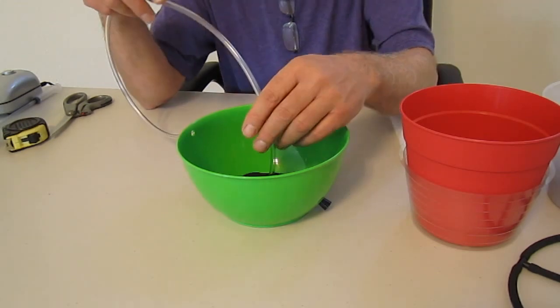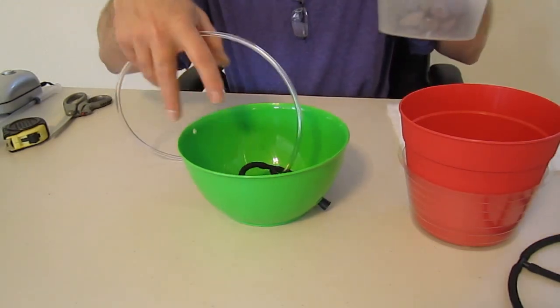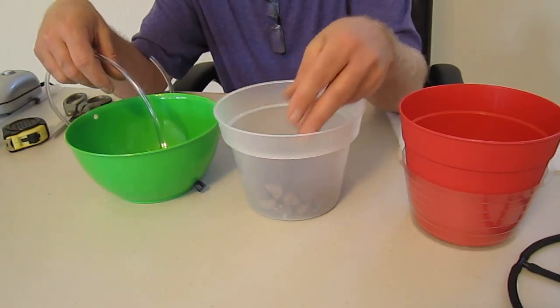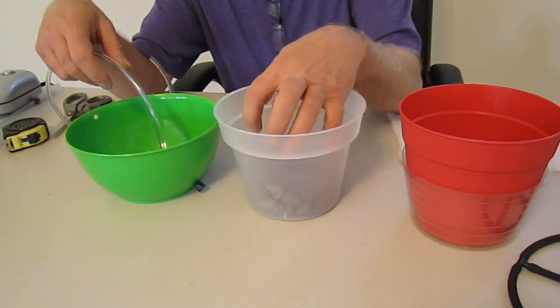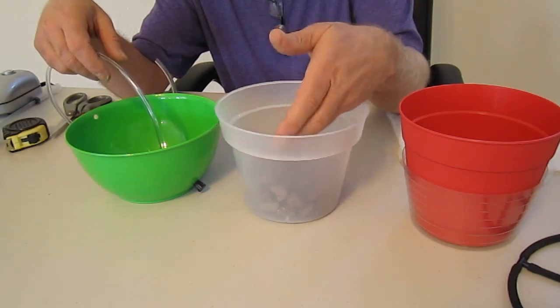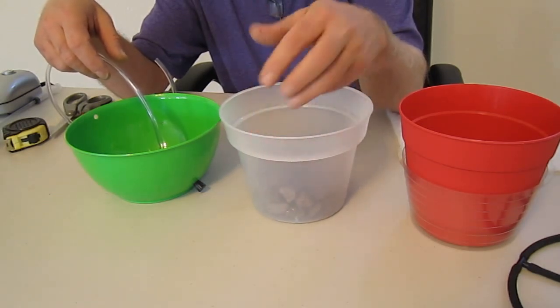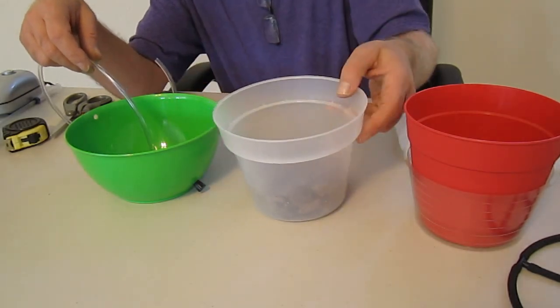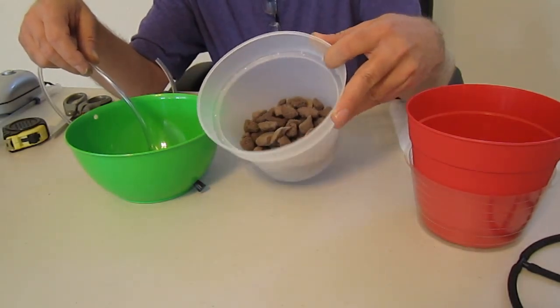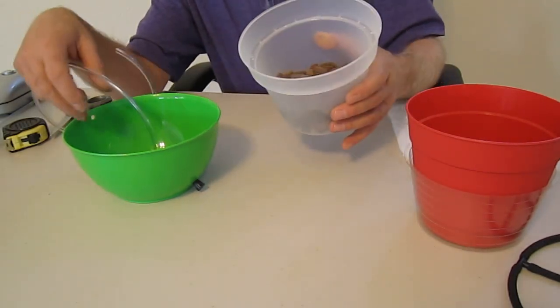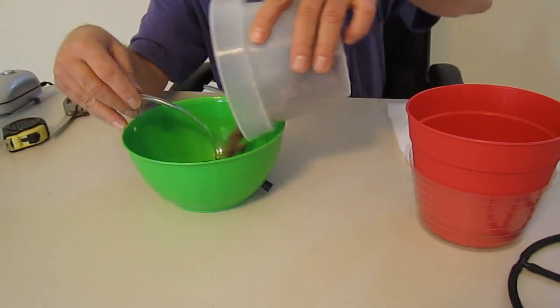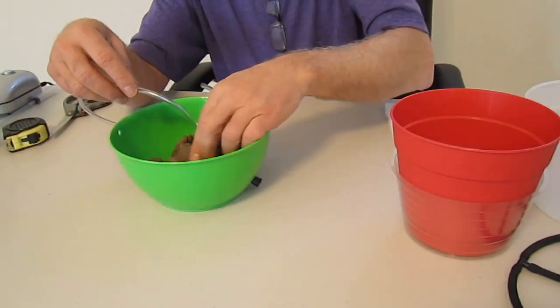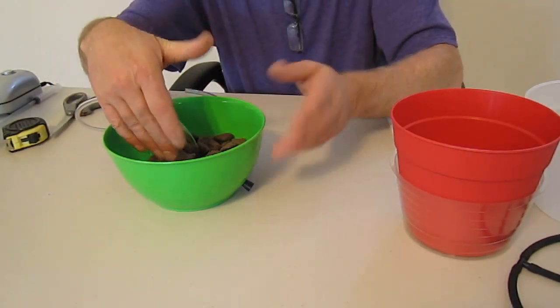At this point, what we're going to do is we're going to go ahead and fill this with an aggregate. And we're using grow stones today. You can use lava rock, you can use river rock, pebbles, anything you want. You can even use hydroponic clay balls. But just make sure you rinse your media thoroughly before you place it in. So what we're going to do is we've already pre-measured our grow stones. We're going to pour that in over on top of our air injection technology like this. And this is going to give us our water and air chamber.